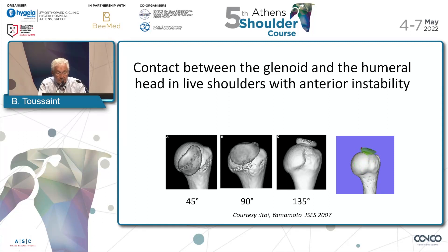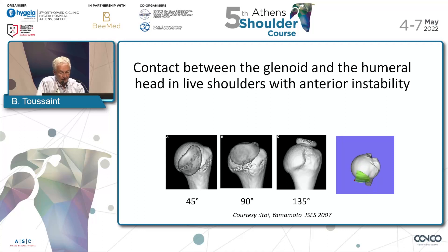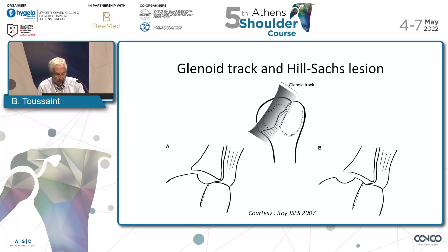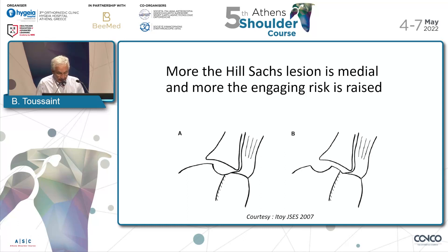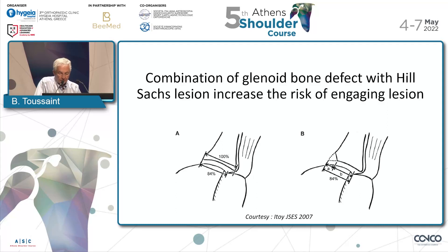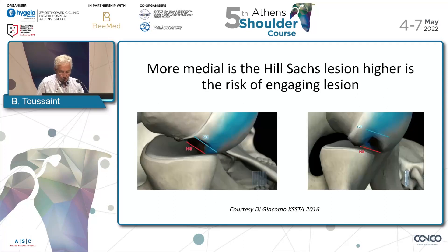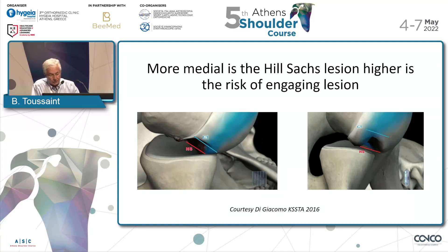You see the reconstruction view from Itoi — the glenoid area in green over the humeral head at different flexion angles: 45, 90, and 135 degrees. The glenoid tract and Hill-Sachs lesion is very important; you can see at the inferior part there is a risk of engagement. The glenoid tract and Hill-Sachs lesion increase the risk of engaging lesion. Di Giacomo explained very well that the combination of the two defects increases the risk of an engaging lesion.